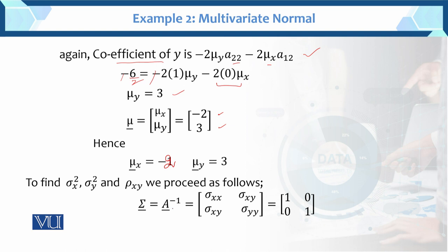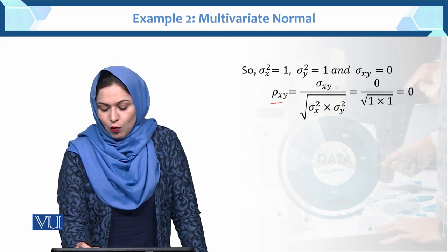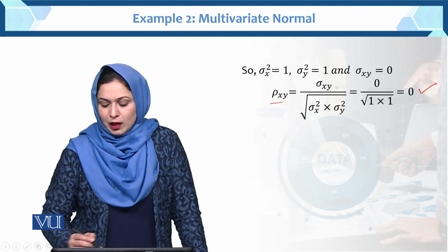Next, to find sigma squared x, sigma squared y, and the correlation, we proceed as follows. We know that A inverse equals sigma. The variance matrix has coefficients: the diagonal entries of A inverse give us sigma squared x equals 1 and sigma squared y equals 1, and the covariance is 0. The correlation equals covariance over the square root of the variances, so the correlation is 0, indicating that the two variables are independent.